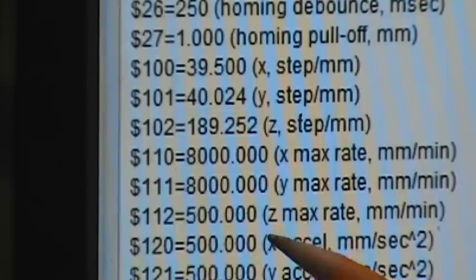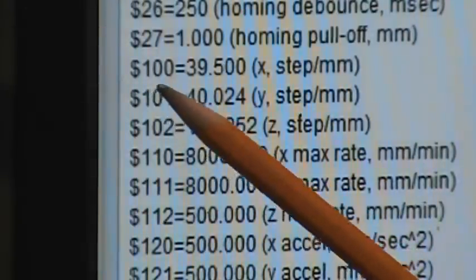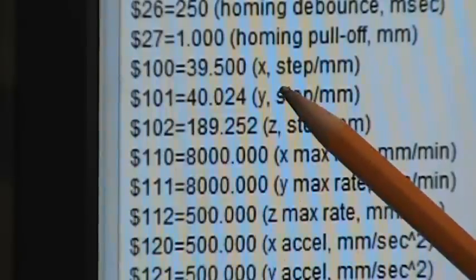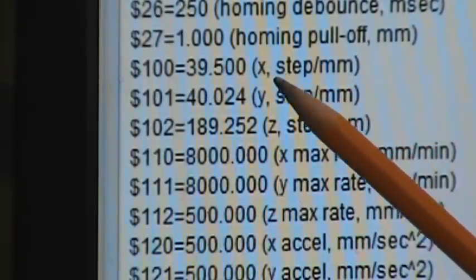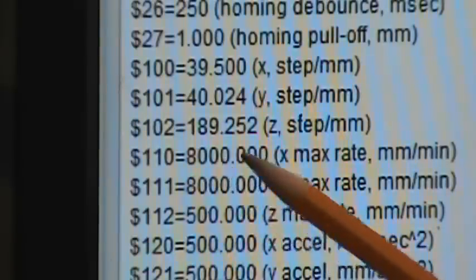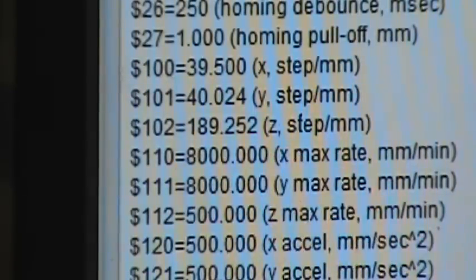Okay, this screen shows, after you've hit Enter, all the different settings in your Grbl software. What we're going to be looking at and focusing on right now is this dollar sign 100 equals 39.5 steps per millimeter, and this is in the X axis. Below that at 101 is the Y axis, and 102 is the Z axis. This is the procedure I'm showing you today. You can use it for each of the axes.